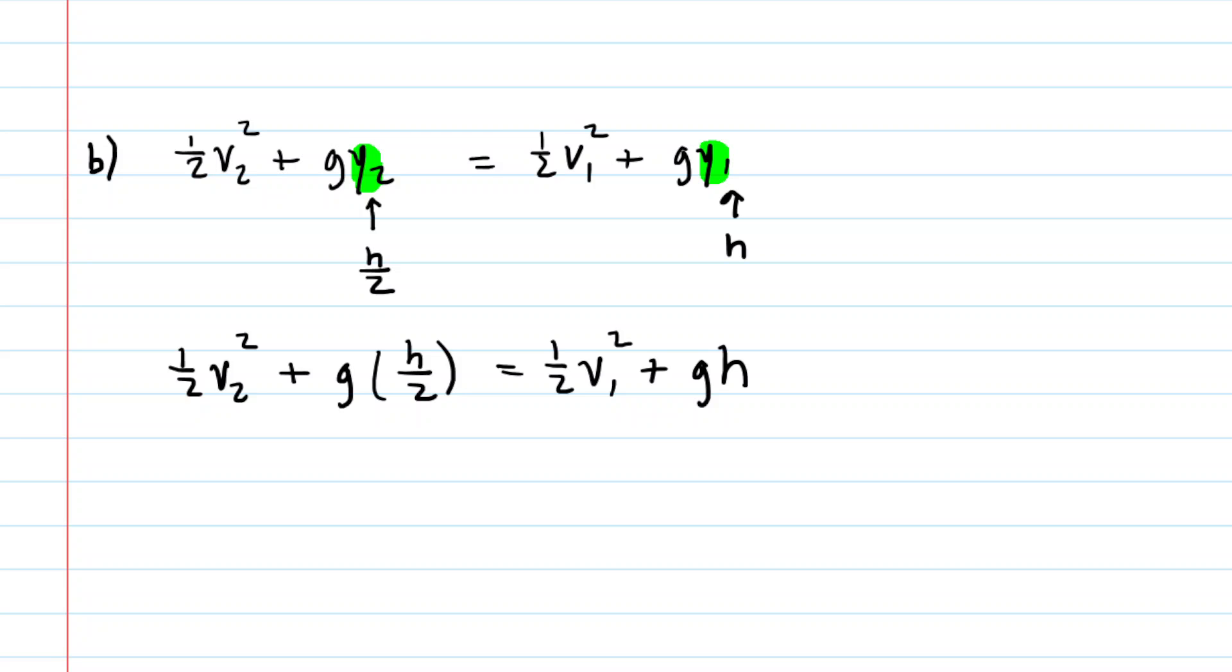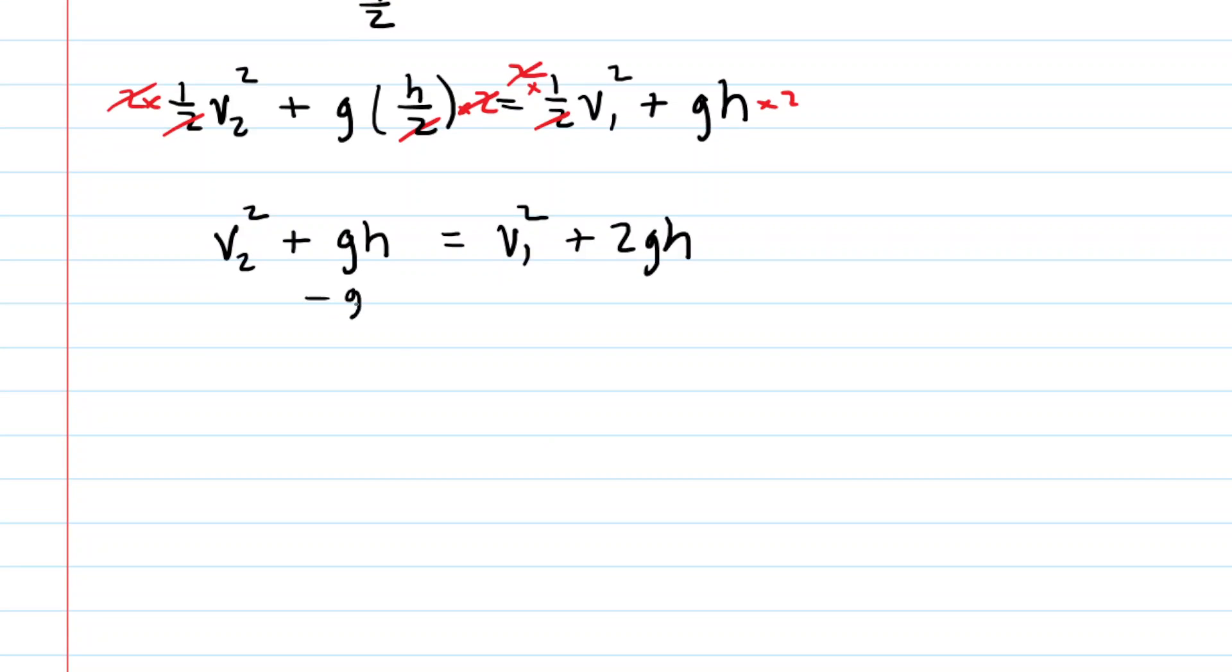And now we're going to try to work towards solving for that final speed, that speed at position number two. And to do that, we might wish to double every one of the terms in this equation. So if we double each of the terms, we're going to get some simplifying to a large extent here, because this two cancels that. Same thing here, same thing there. And then in the final term, you'll be left with a two GH. Continuing to simplify, we could subtract one GH from both sides of the equation. So now we have the speed at position two squared is equal to the speed at position one squared. And then two GH minus one GH is just GH.